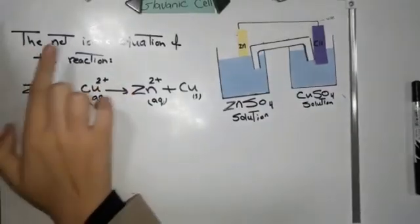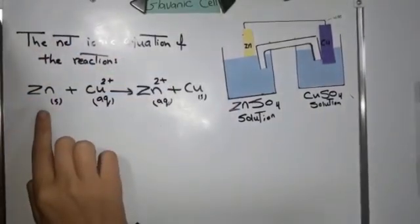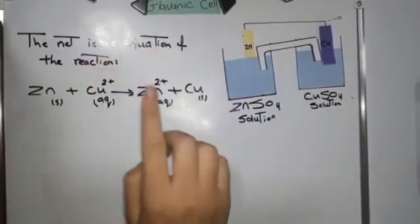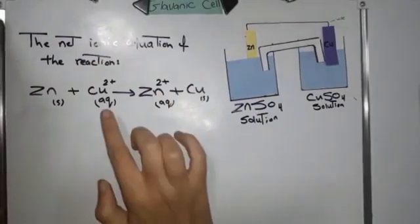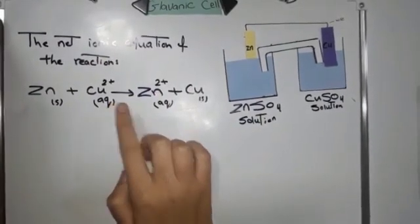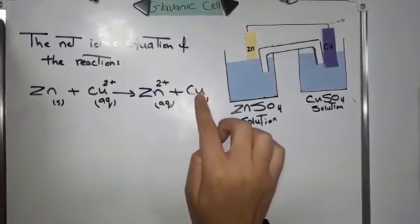The net ionic equation of the reaction: zinc loses two electrons and changes to zinc positive 2, and copper positive 2 gains two electrons and changes to copper metal.